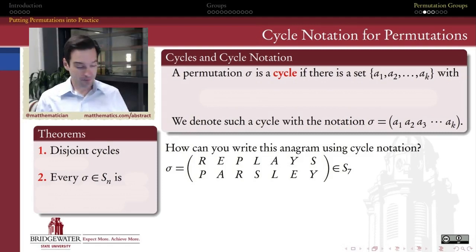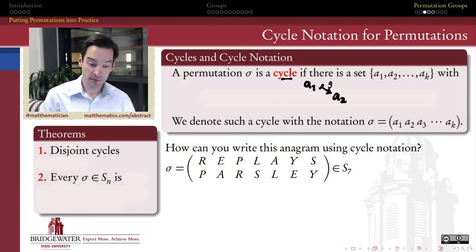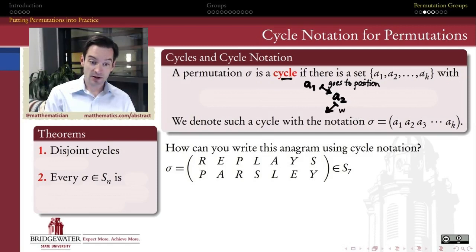So first of all, what is a cycle? A permutation is called a cycle if there is a set of elements inside of the set that we're permuting, in which the following thing happens. That the image of A1 is that it goes to position A2 under this permutation. The image of A2 is that it goes to position A3 under this permutation, and so on and so on. So this element is getting sent to that position. That element is getting sent to the A3 position, A4, A5, and so on and so on.